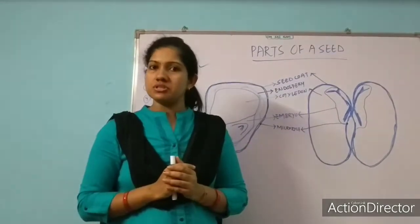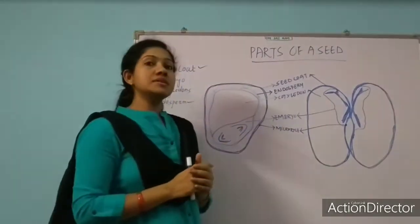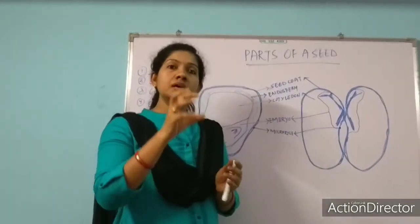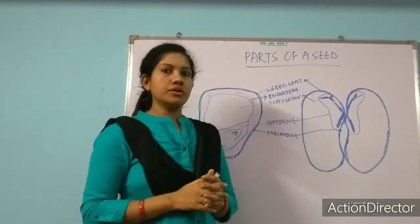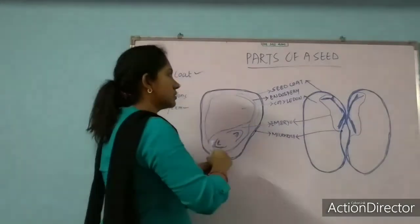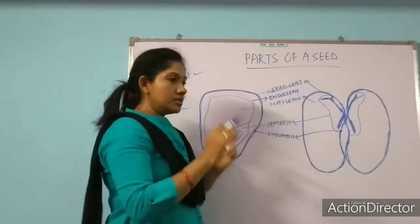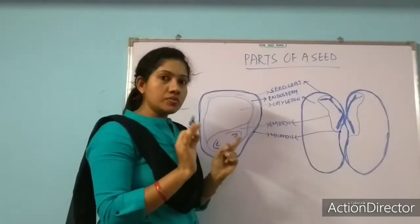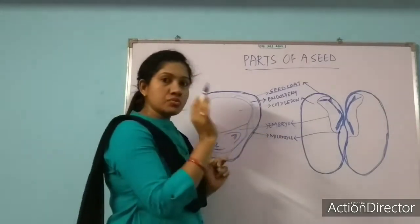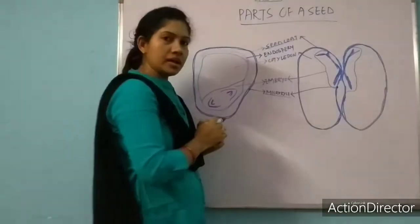When the seed coat bursts, it becomes easy for the sprout to come out — easy for germination. We will discuss this further in the germination topic. So this is the micropyle pore which helps in absorbing water for the seed.